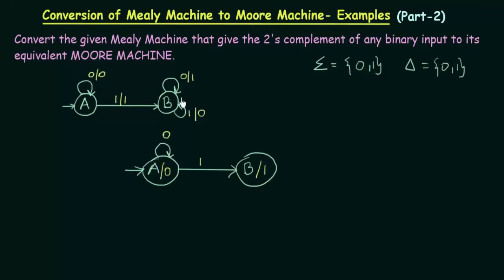Now let's come to state B. State B on getting input 0, it goes to B itself and gives output 1. Since output 1 is already associated to state B, I can send it to B itself on input 0. Now, when B gets input 1, it goes to B itself and should give output 0. But if I send it to this B itself, I would have to associate output 0 to B — but B already has output 1 associated to it.